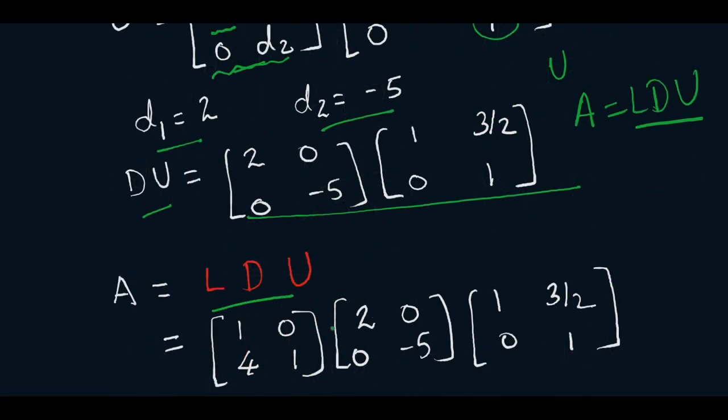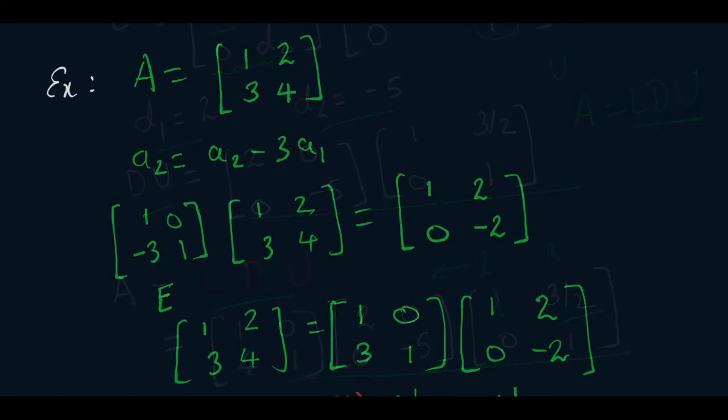This is our factorization for LDU. In the original matrix, this 2 was here and 3 was here. We took out 2 from this matrix, hence the remaining elements were 1 and 3/2. Now let us take another example.